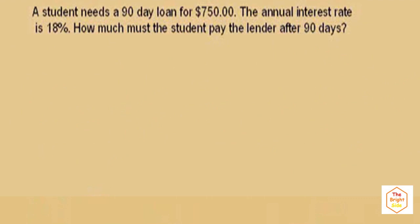A student needs a 90-day loan for $750. The annual interest rate is 18% — be careful with that. How much does the student pay the lender after 90 days? The student is going to pay off the loan in 90 days, but we need to figure out how much he has to pay — he's got to pay some interest plus the amount he borrowed. We're going to use the simple interest formula. I is what we're going to calculate, and the principal is $750.